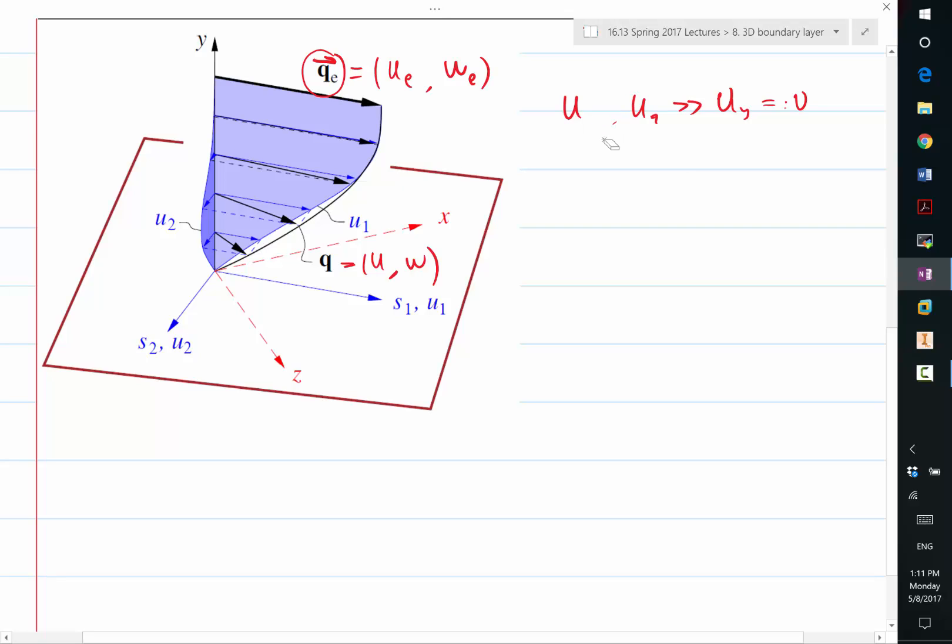And our V is the Y directional velocity. The assumption is U and W is much, much greater than V.